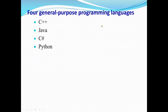The four main general-purpose programming languages are C++, Java, C#, and Python. In this course we are going to learn Python. If you learn any one of these languages, it's very easy to learn the rest, because every programming language has three control structures: sequential, selection, and repetition. We will cover all three in this course.